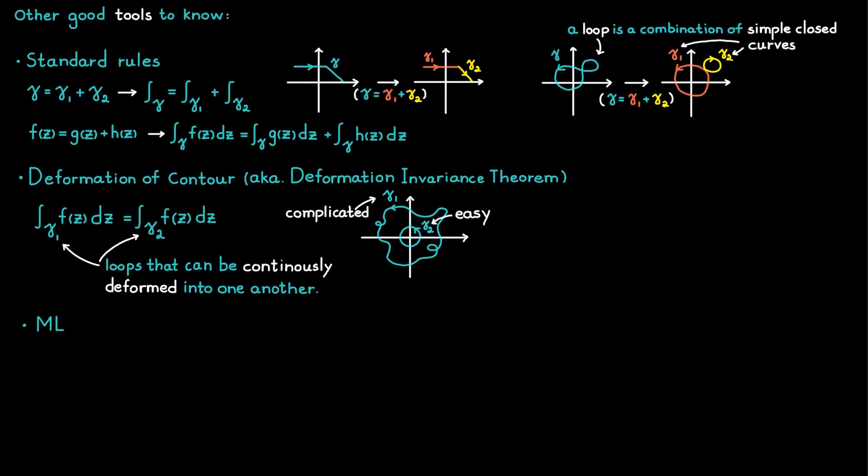The ML inequality, also known as the estimation lemma, is used to set the upper bound for an integral. It states that the absolute value of an integral will always be equal or lesser than some value m, which denotes some upper bound of the absolute value of a function f on the contour gamma, times l, which is the arc length of the contour gamma.